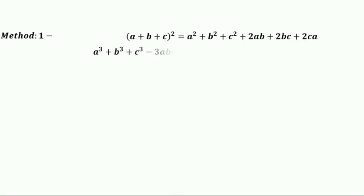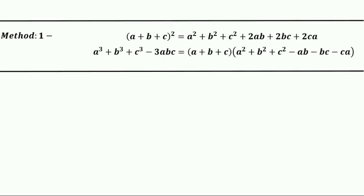I will show you three methods for solving this. In the first method, the identities we are using are: (a+b+c)² equals a²+b²+c²+2ab+2bc+2ca, and the second identity is a³+b³+c³ minus 3abc equals (a+b+c) times (a²+b²+c² minus ab minus bc minus ca).